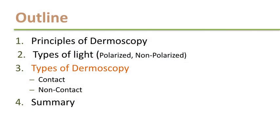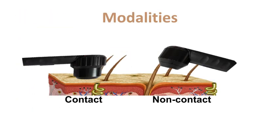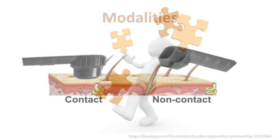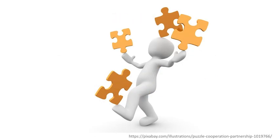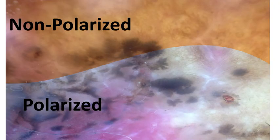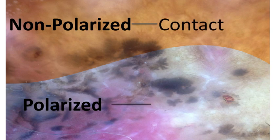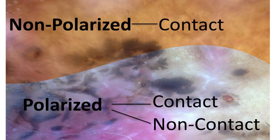Now what are the modalities of dermoscopy? Dermoscopy can be performed either in the contact or non-contact mode, depending if we are placing the dermatoscope over the skin or not. So if we put everything together, we have three dermoscopy types: non-polarized dermoscopy that is performed in the contact mode, and polarized dermoscopy that can be performed both in the contact and non-contact mode.